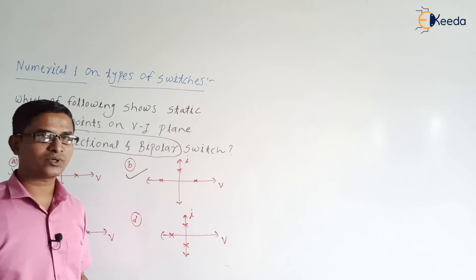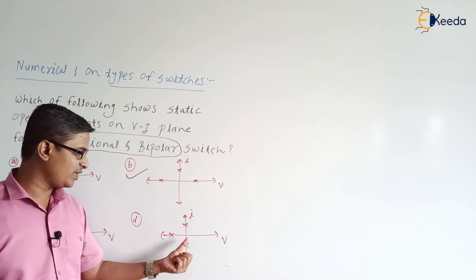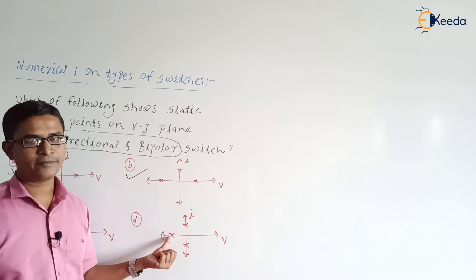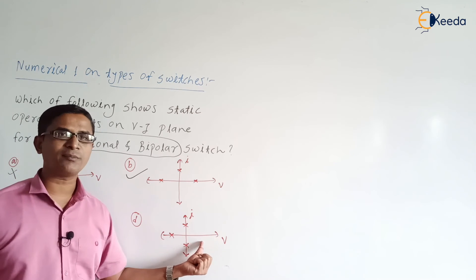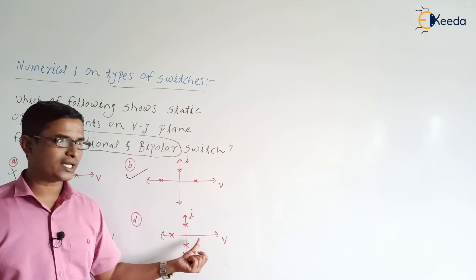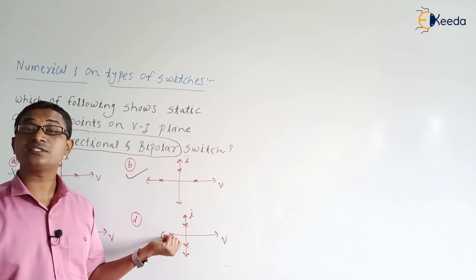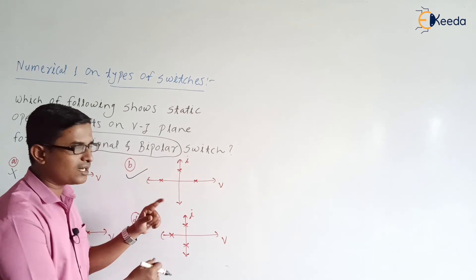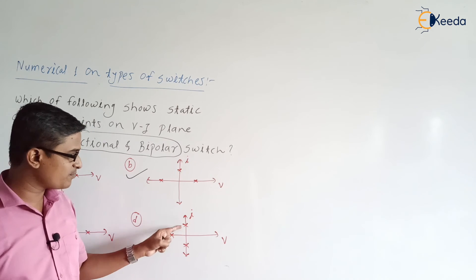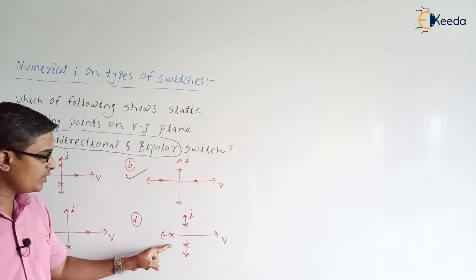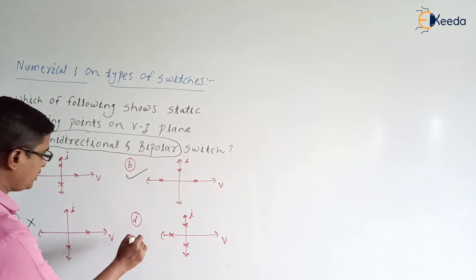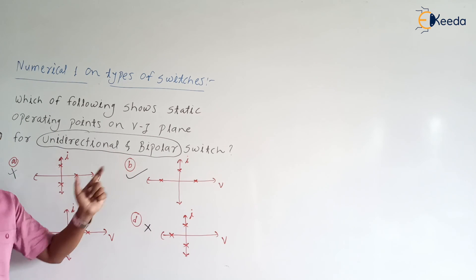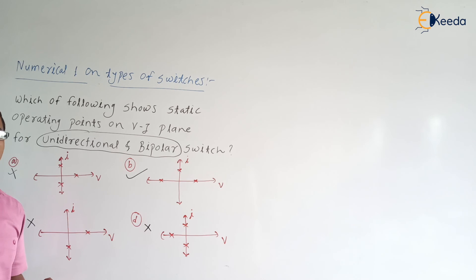Next, for the fourth option. Corresponding to the off-state point, the voltage is negative — positive voltage is not blocked by the switch. So the voltage being only negative means the switch is unipolar. As well, the switch is allowing current in both directions, so the switch is bidirectional. It is unipolar and bidirectional, but we require unidirectional and bipolar — so option D is also not correct.